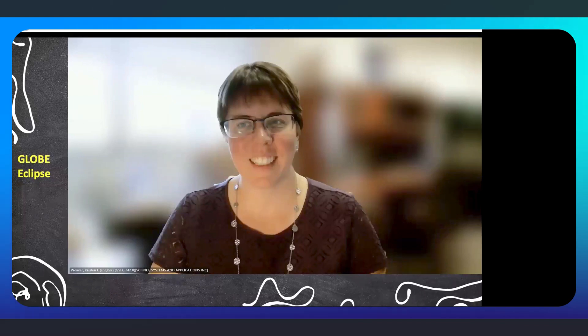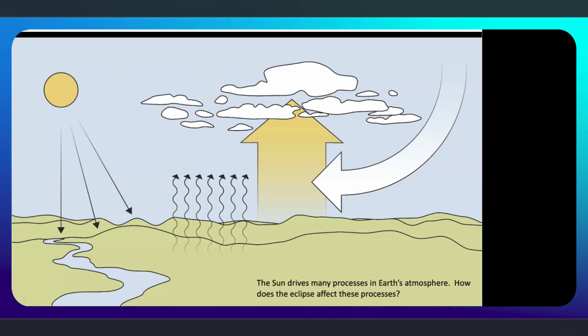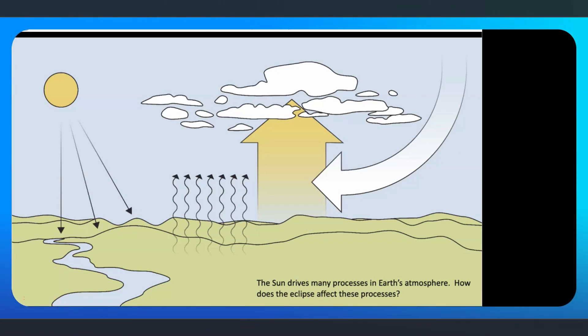Next up is GLOBE Eclipse with Kristen Weaver. Hi, my name is Kristen Weaver and I'm the Deputy Coordinator for the GLOBE Observer Team based at NASA's Goddard Space Flight Center in Greenbelt, Maryland. Along with Marlai Colon-Robles from the GLOBE Clouds Team at NASA Langley Research Center, we co-led the GLOBE Eclipse efforts for the Annular Solar Eclipse in October 2023 and the Total Solar Eclipse in April 2024. I'm going to talk about the data available from the eclipses and some possible research topics for your IVSS projects. The basic idea is that the sun drives a lot of processes in the atmosphere, and having the sun blocked during an eclipse can potentially have an impact on clouds, air temperature, and winds.